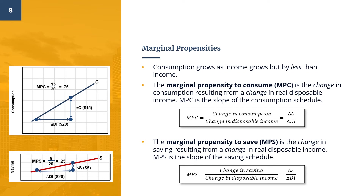What would households do with an extra dollar of real disposable income if they do not spend it? They will save it. So the Marginal Propensity to Save, or MPS, is the proportion of any change in income that is saved — the extra saving resulting from a given change in real disposable income. Visually, the MPS is the slope of the saving schedule.